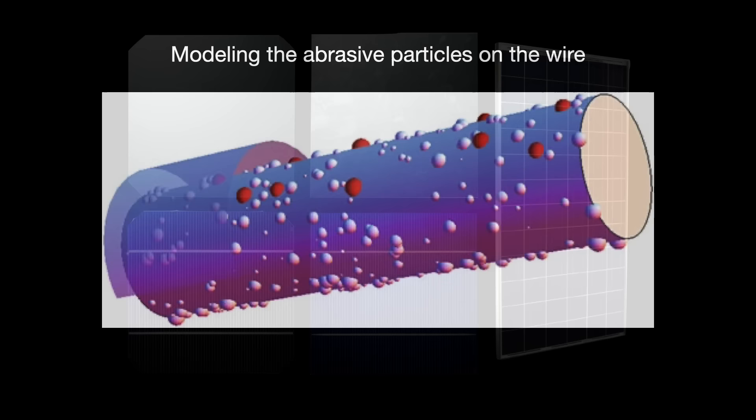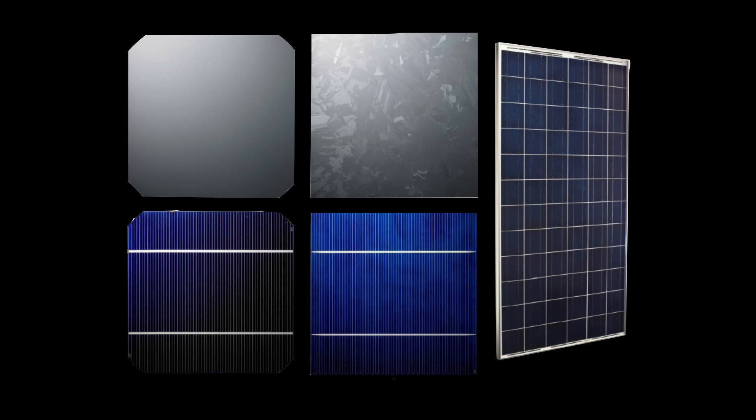Once we have the wafers, they are doped to create the P-N barriers we talked about at the start of this video before being packaged and put together into panels.